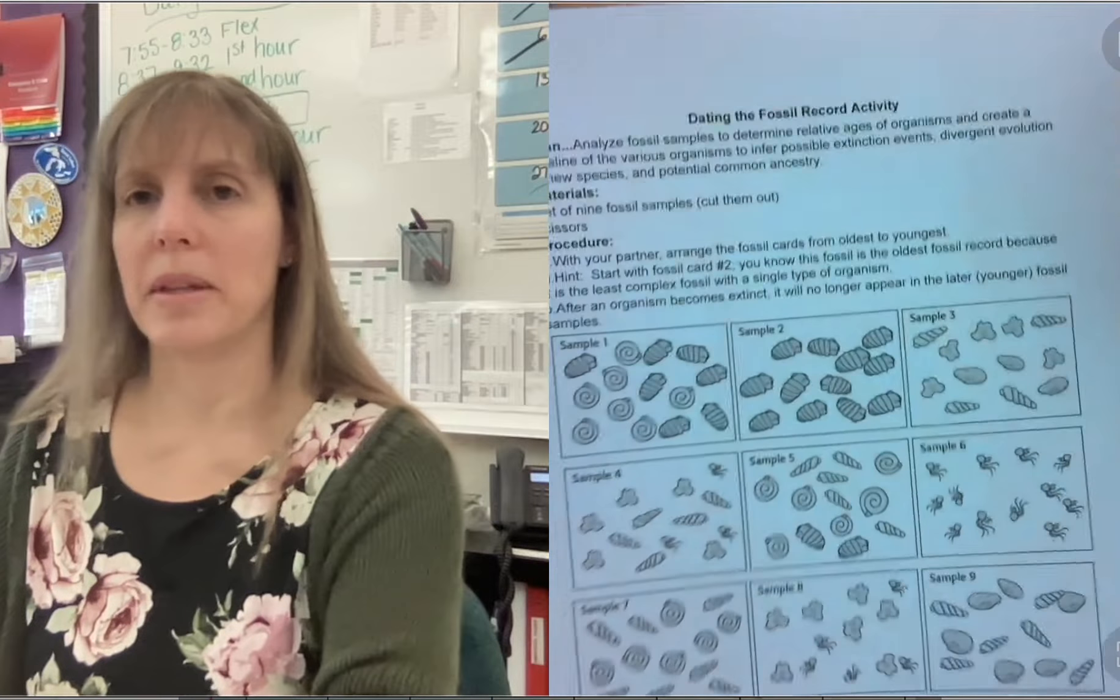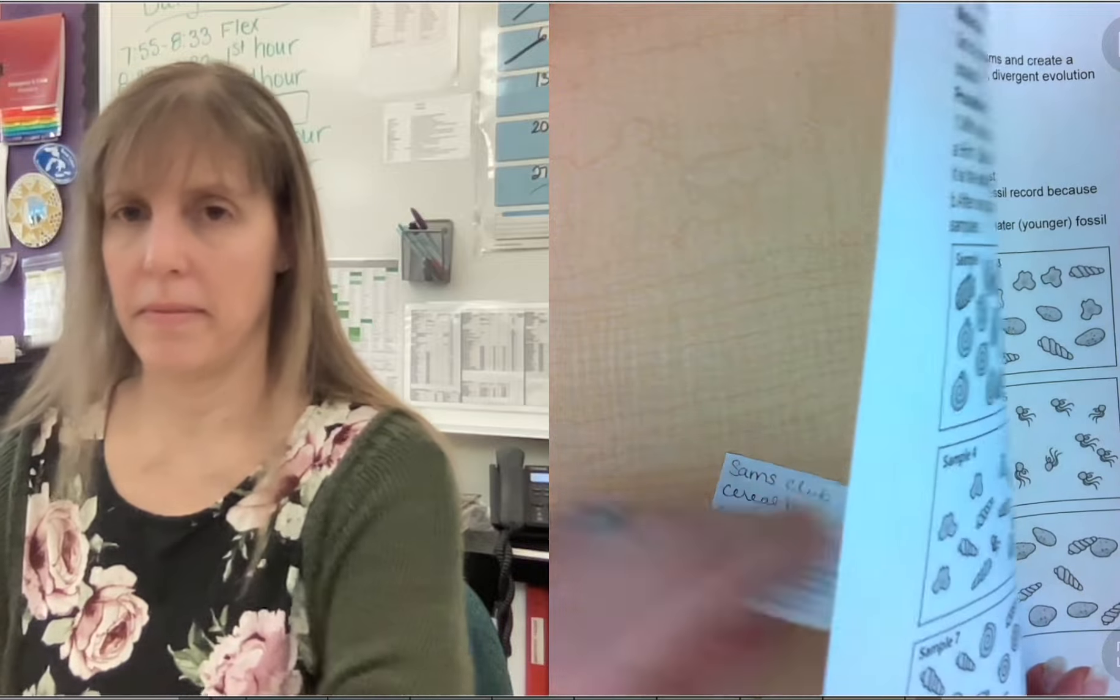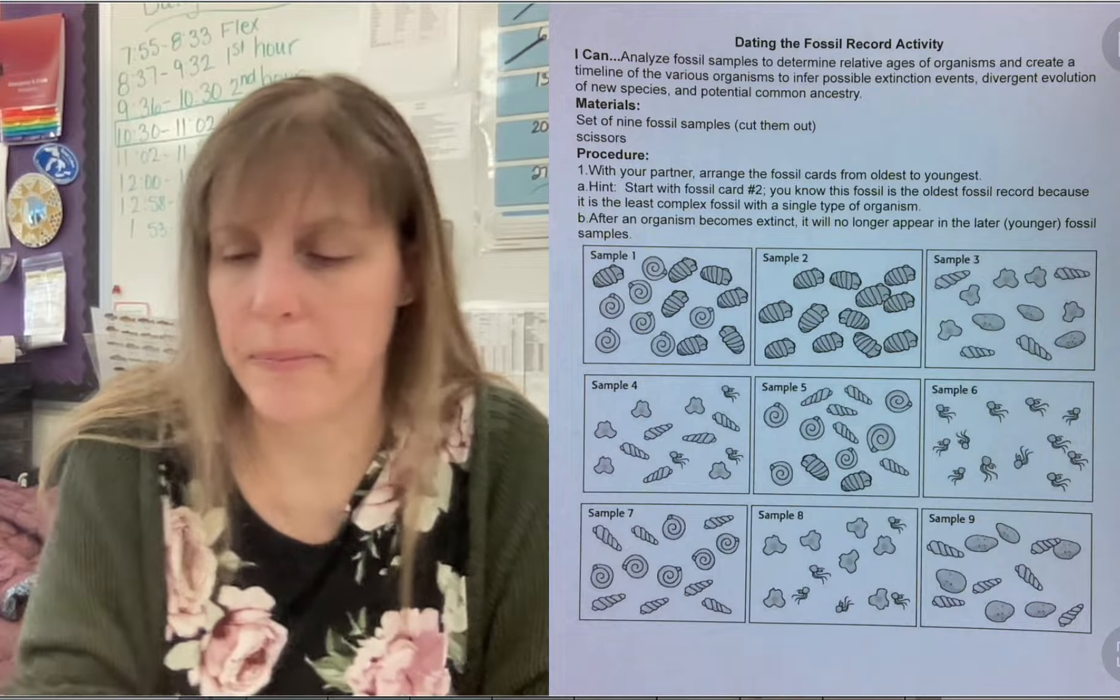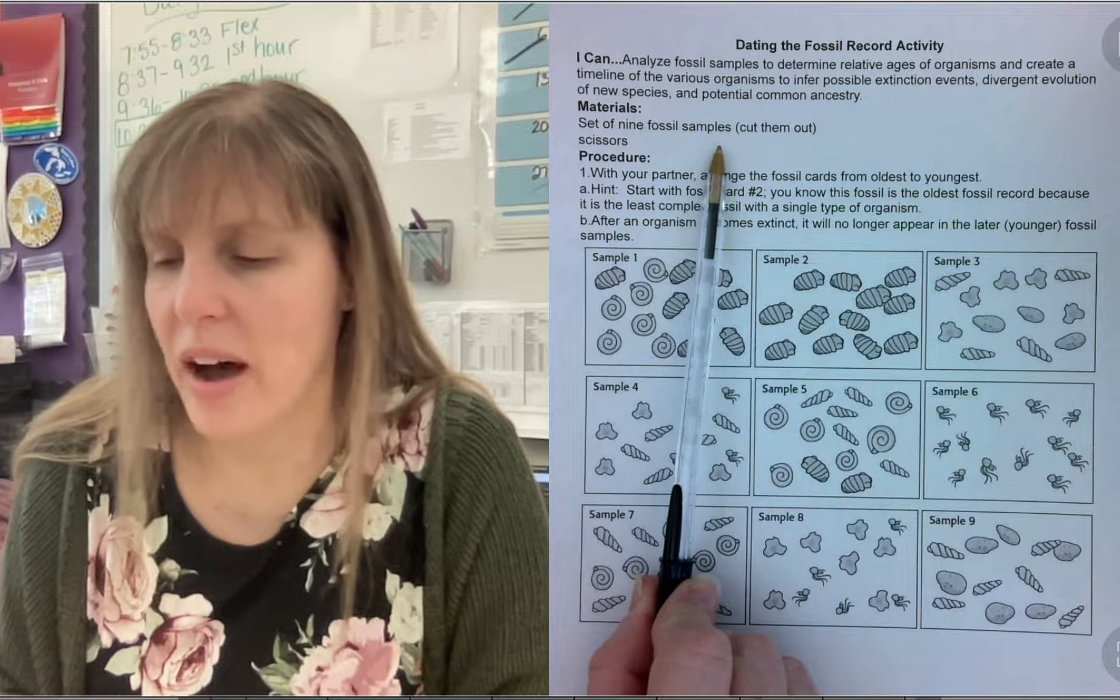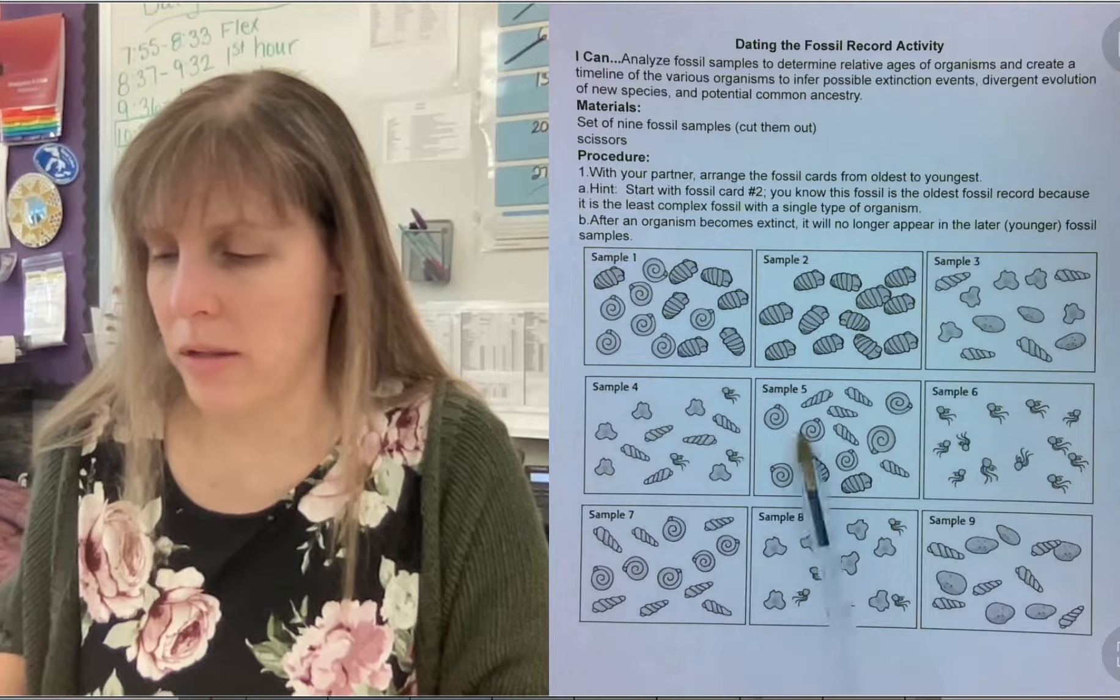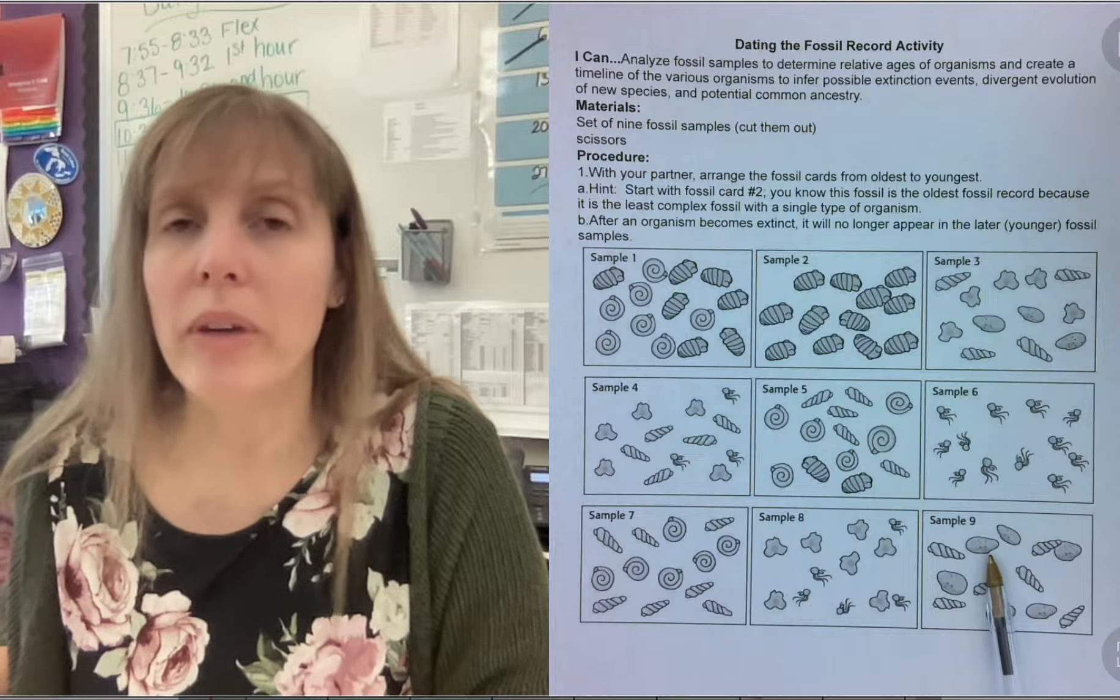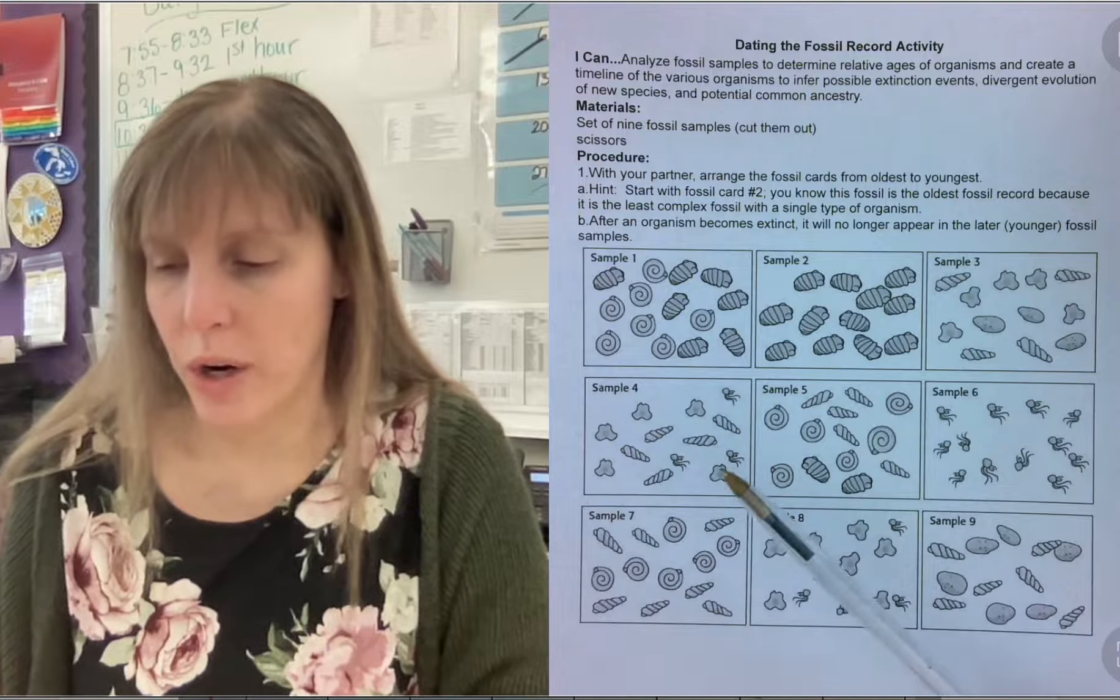So you have something that looks like this, and it's called dating the fossil record activity. And this is the same learning target. Our materials today are a set of nine fossil samples. You're gonna cut them out in scissors. So you're gonna cut out all of these samples. And then you could use a partner or a lab team if you want. Up to three today would be okay. And then you're gonna put them in order.